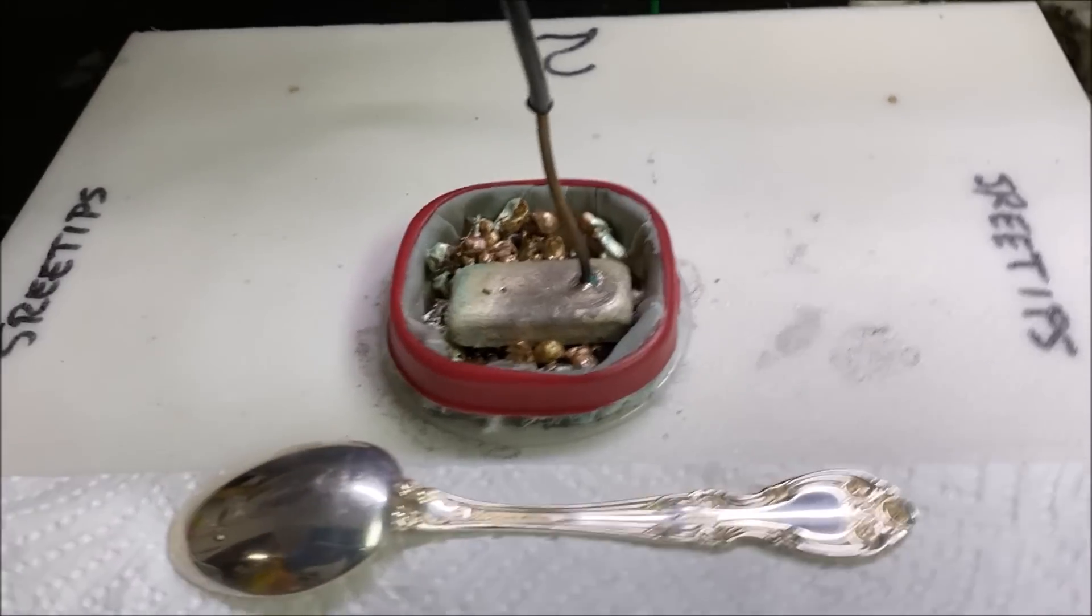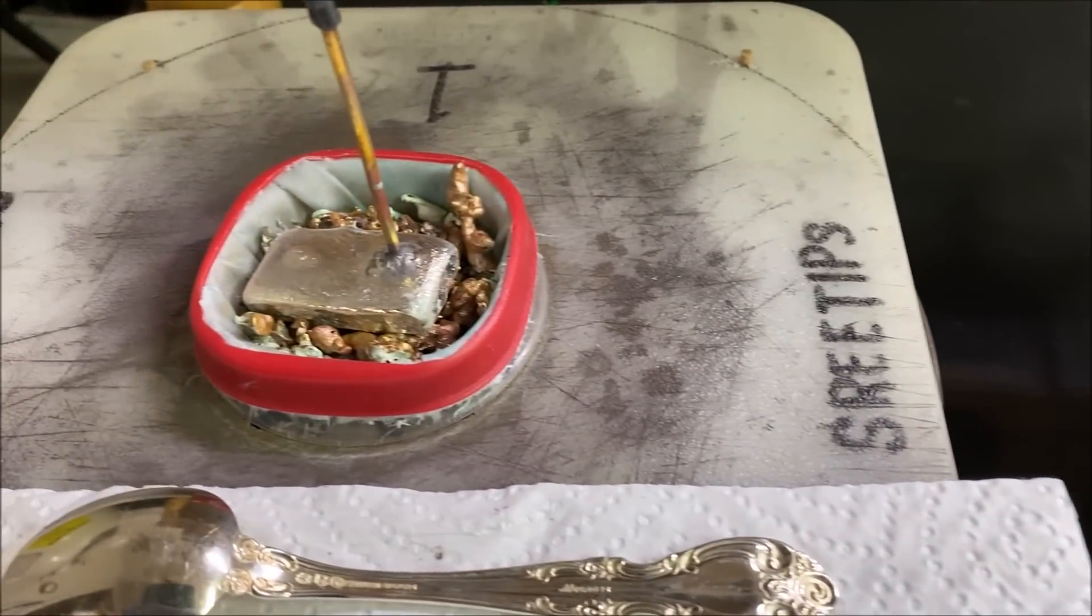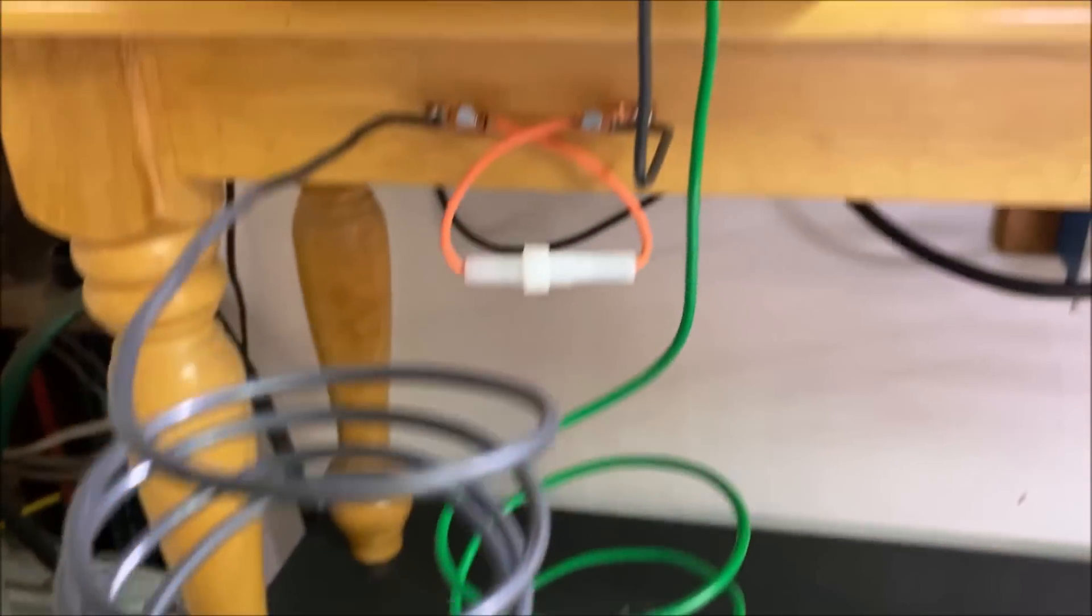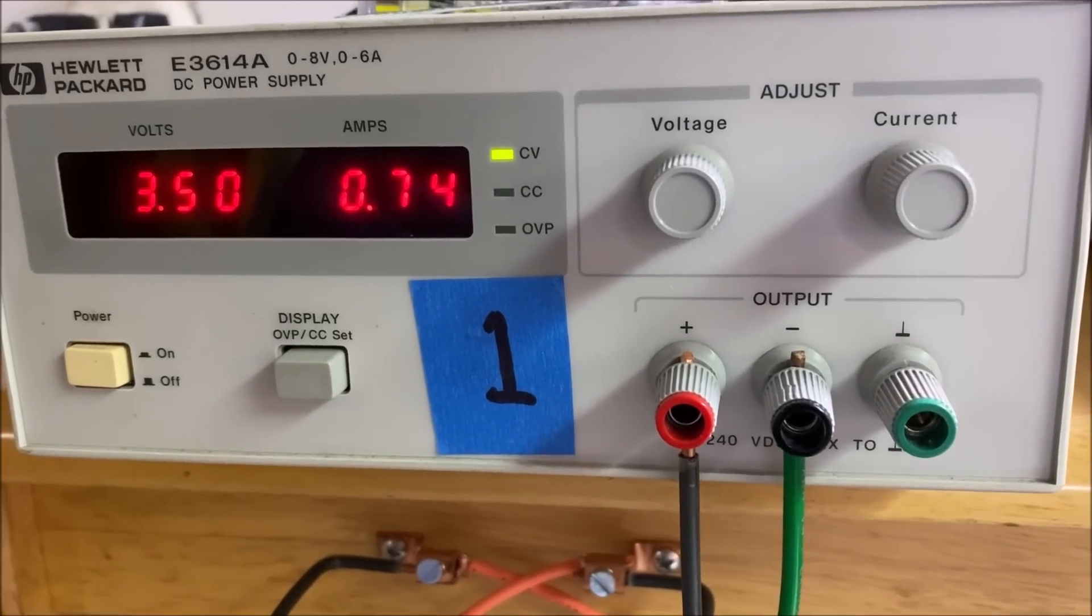There's our anode filter basket. Cell number 1 anode filter basket. And there's our current flow on cell number 1.